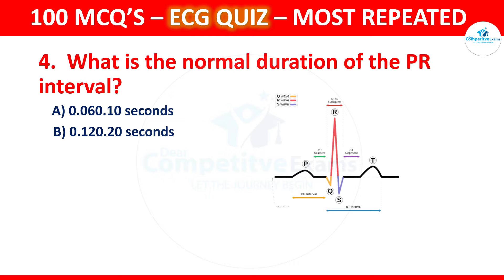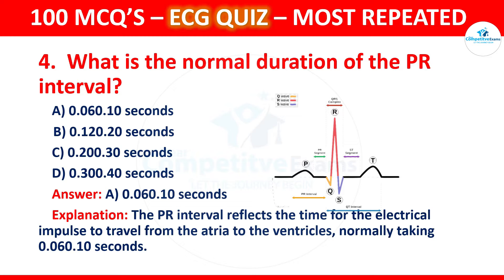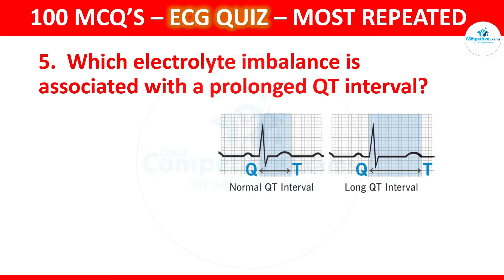Question 4: What is the normal duration of the PR interval? Options are 0.06–0.10 seconds, 0.12–0.20 seconds, 0.20–0.30 seconds, or 0.30–0.40 seconds. The correct answer is 0.12–0.20 seconds. The PR interval reflects the time for the electrical impulse to travel from the atria to the ventricles, normally approximately 0.12–0.20 seconds.